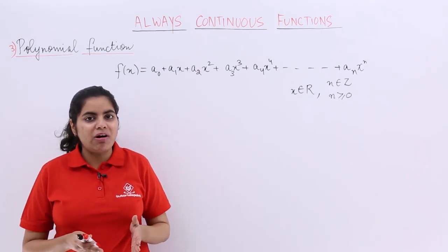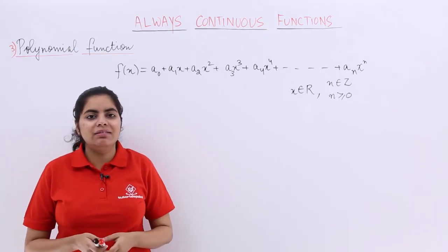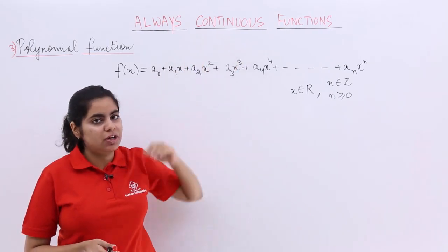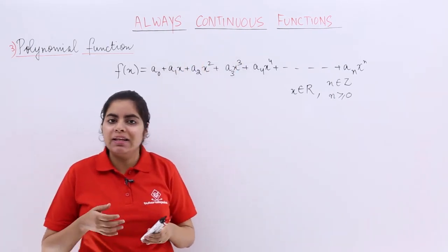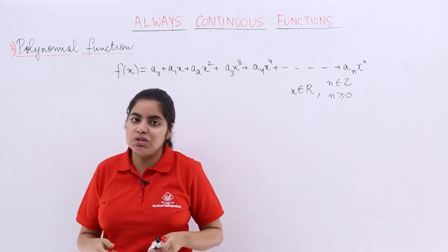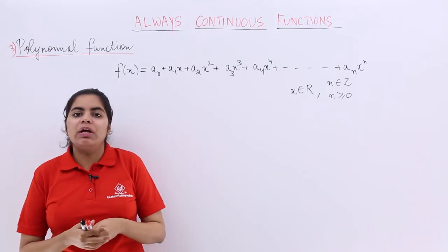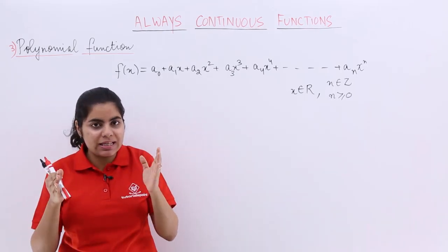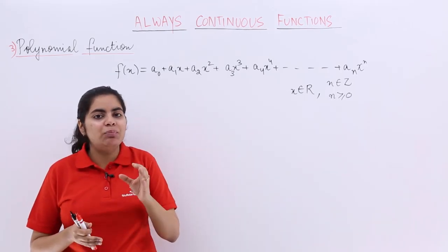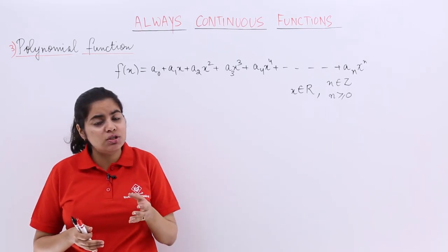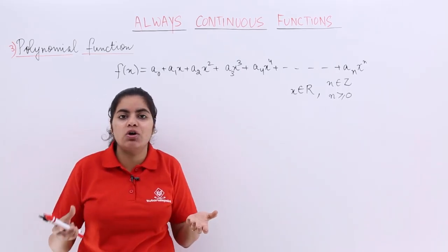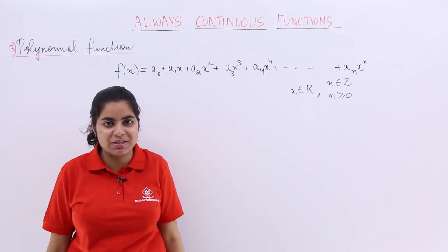In this video, let's talk about another category of always continuous functions. The name of this category is polynomial function. We are going to say and memorize from now onwards that polynomial function is also like identity function and constant function — everywhere continuous.